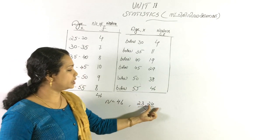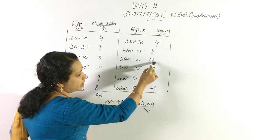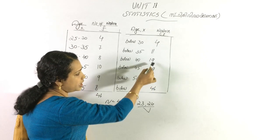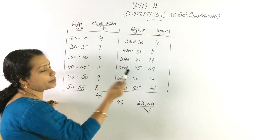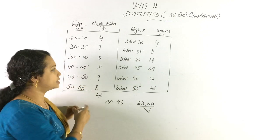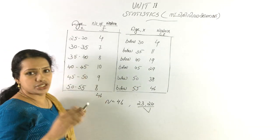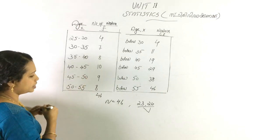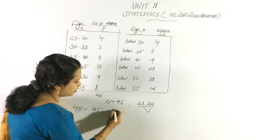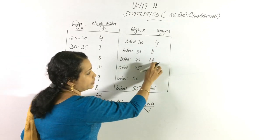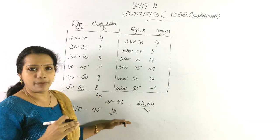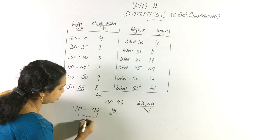If you have 23 values and 24 values in these sections, the 23rd value falls in the class 40 to 45. We have 10 workers in this category. What is the interval here? The interval is 5.